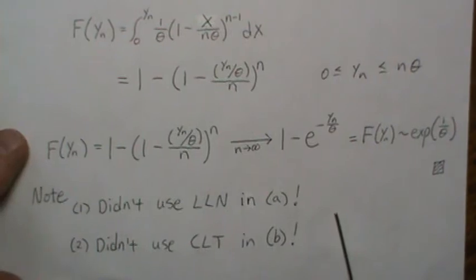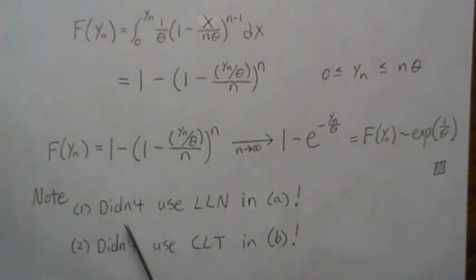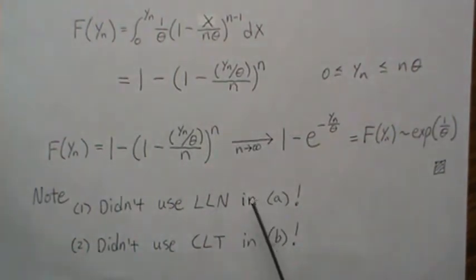But the really cool part about this example is we didn't use the law of large numbers to prove convergence in probability. And we didn't use the central limit theorem to prove convergence in distribution.